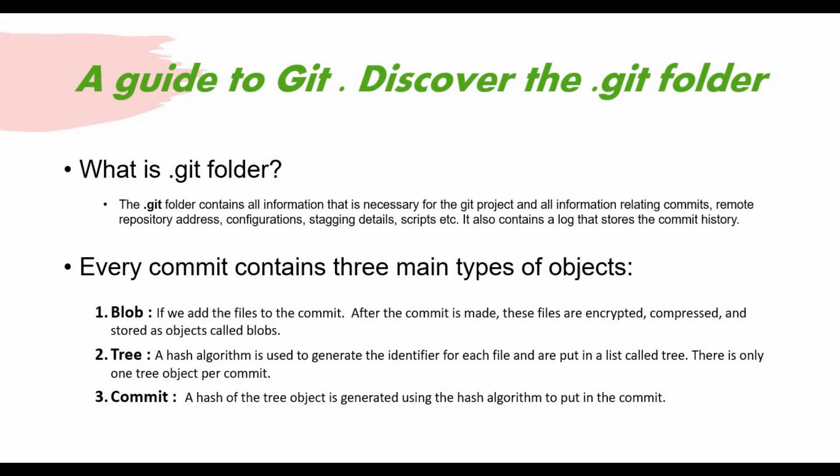This encryption is done using a hash algorithm. There is something called a tree — the hash algorithm is used to generate a unique identifier for each file, and that is put into a list called tree. For every commit there will be only one tree object. There is also a commit object created — you create the hash of the tree object generated using the hash algorithm, usually SHA-256, to convert it into an encrypted format.